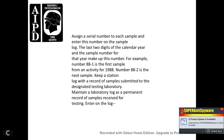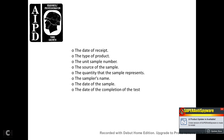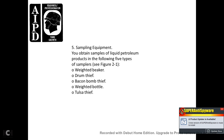Keep a station log with a record of samples submitted to the designated testing laboratory. Maintain a laboratory log as a permanent record of samples received for testing, entering: date, type of product, unit sample number, source of sample, quantity the sample represents, number of samples, sampler's name, date of sampling, and date of test completion.